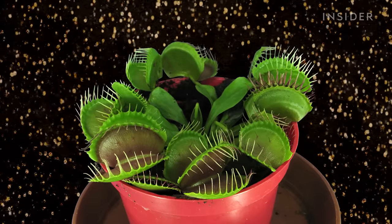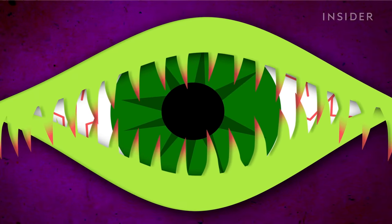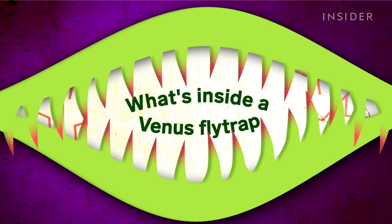Using its famous trap, it can catch prey faster than you can blink. But what happens next inside a Venus flytrap?